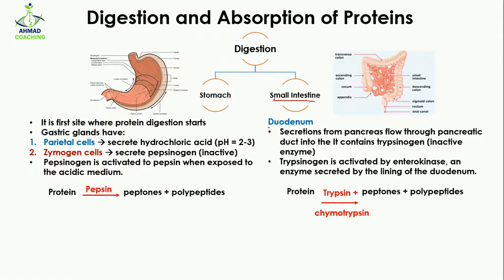The second site for protein digestion is the small intestine, which is made up of three parts: the duodenum, jejunum, and ileum. In the duodenum, secretion from the pancreas enters through the pancreatic duct. This secretion contains trypsinogen, which is again an inactive enzyme. When it enters the duodenum, it is activated by the enzyme enterokinase into trypsin — for the same reason as pepsinogen in the stomach.